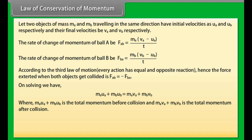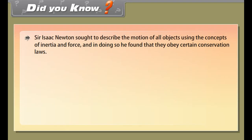The rate of change of momentum of ball B, FBA equals MB into VB minus UB upon T.